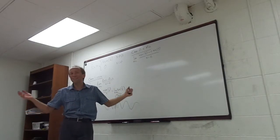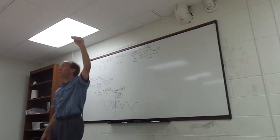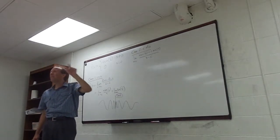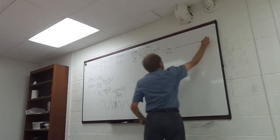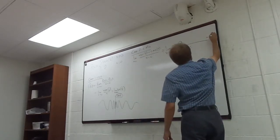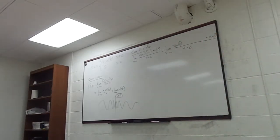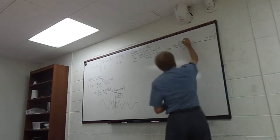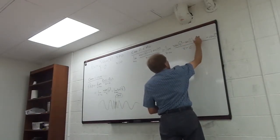Anybody remember how we proved the product rule? In the numerator we would have had f(x)g(x) minus f(c)g(c). We added and subtracted something in the middle — that's what you want to do here too. So what would you like me to put in the middle? I'll put the two parts we already know there. I need to add and subtract x·sin(1/c) — so minus x·sin(1/c) plus x·sin(1/c).